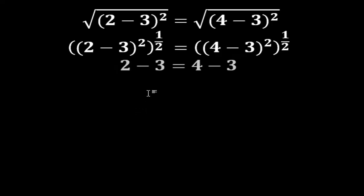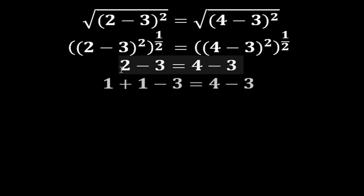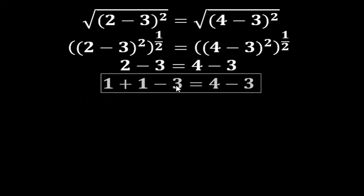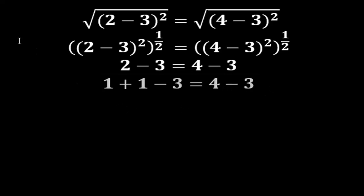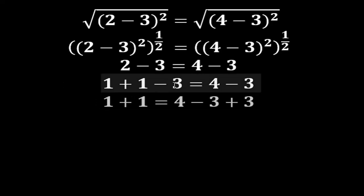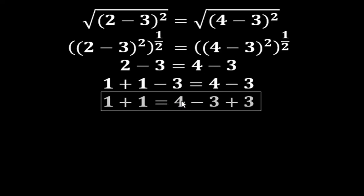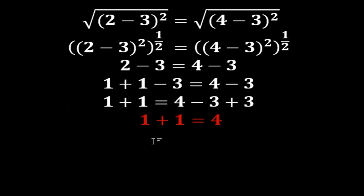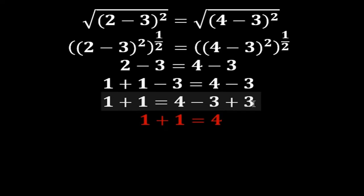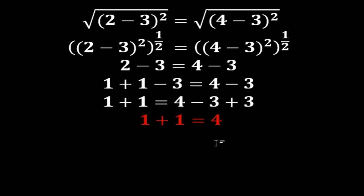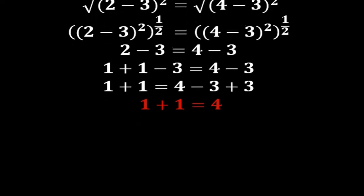That means 2 minus 3 equals 4 minus 3. Now I write 2 as 1 plus 1, so this becomes 1 plus 1 minus 3 equals 4 minus 3. Adding 3 to both sides: minus 3 plus 3 is 0, so we get 1 plus 1 equals 4. And that is the brain teaser!